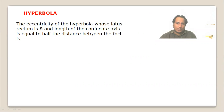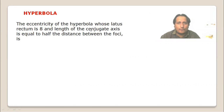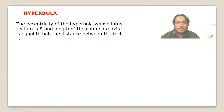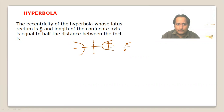Find the eccentricity of a hyperbola whose latus rectum is 8 and length of conjugate axis is equal to half of distance between foci. For standard hyperbola, the equation is x²/a² - y²/b² = 1. We need to recall the formula for latus rectum and the properties of the conjugate axis.